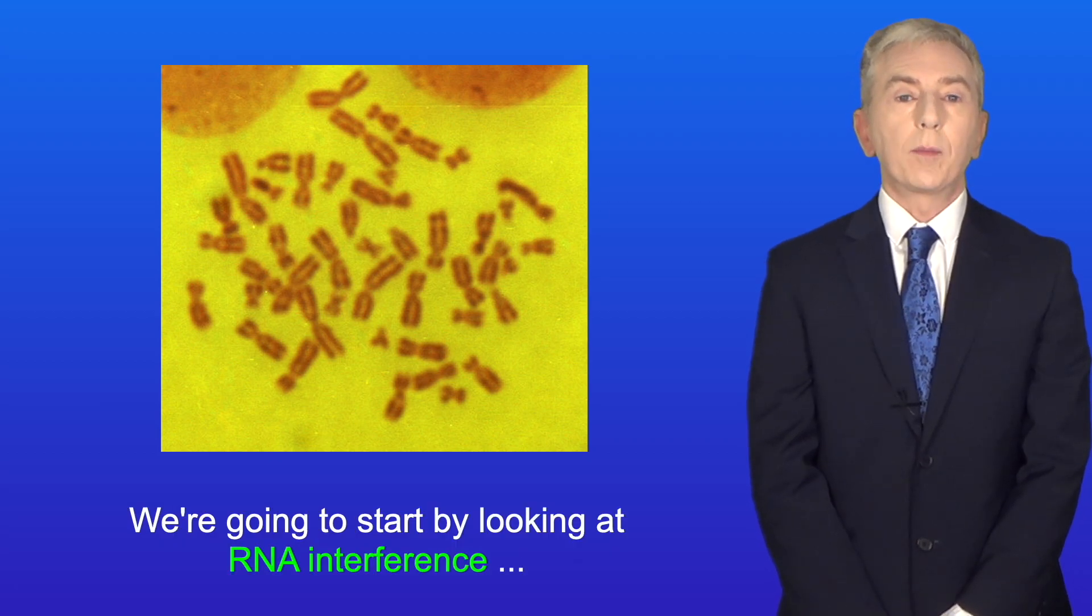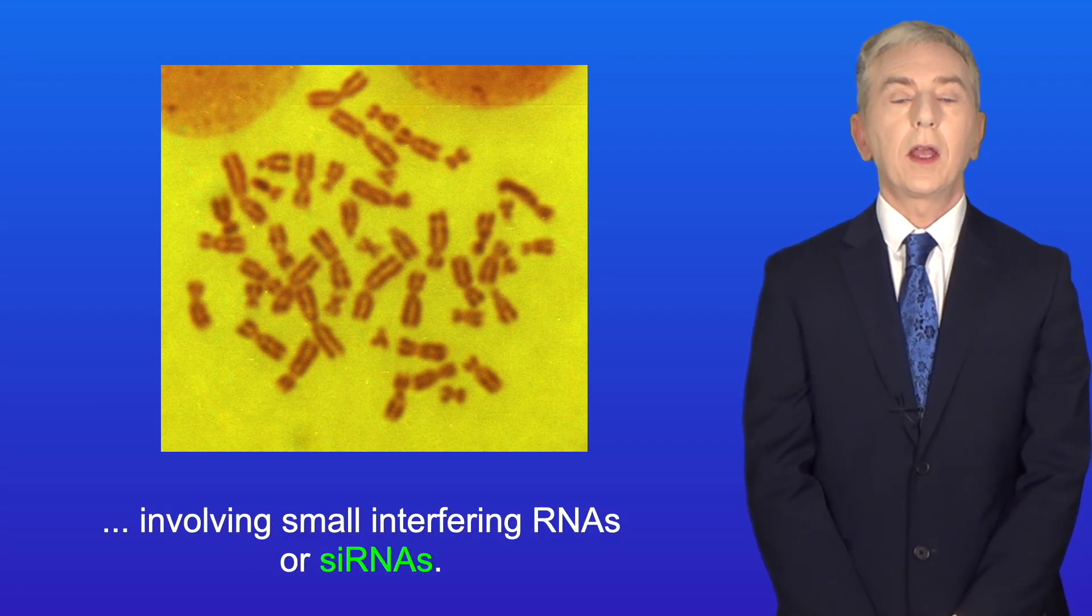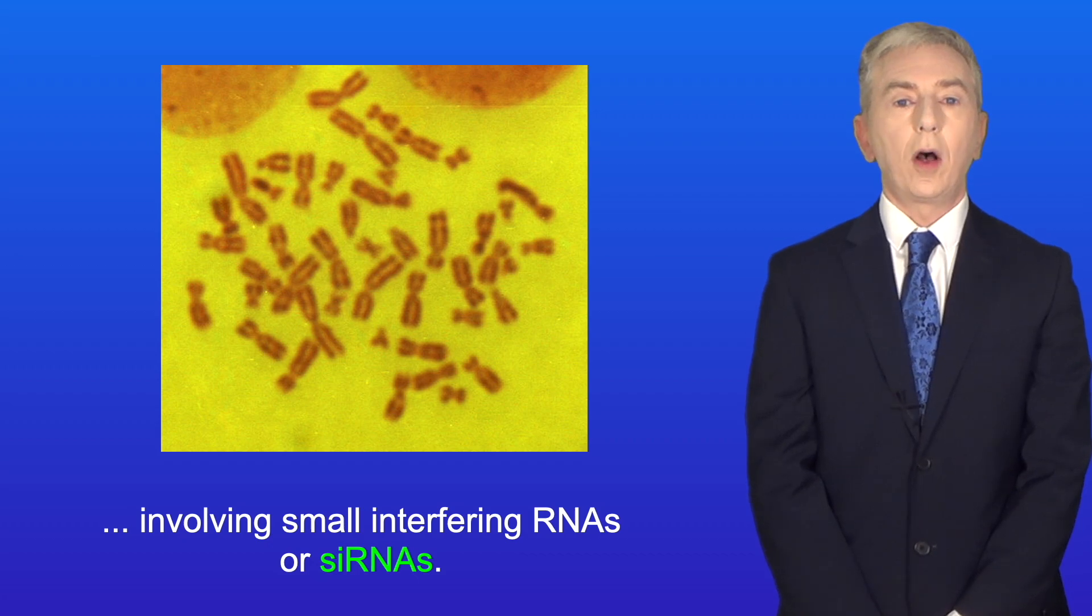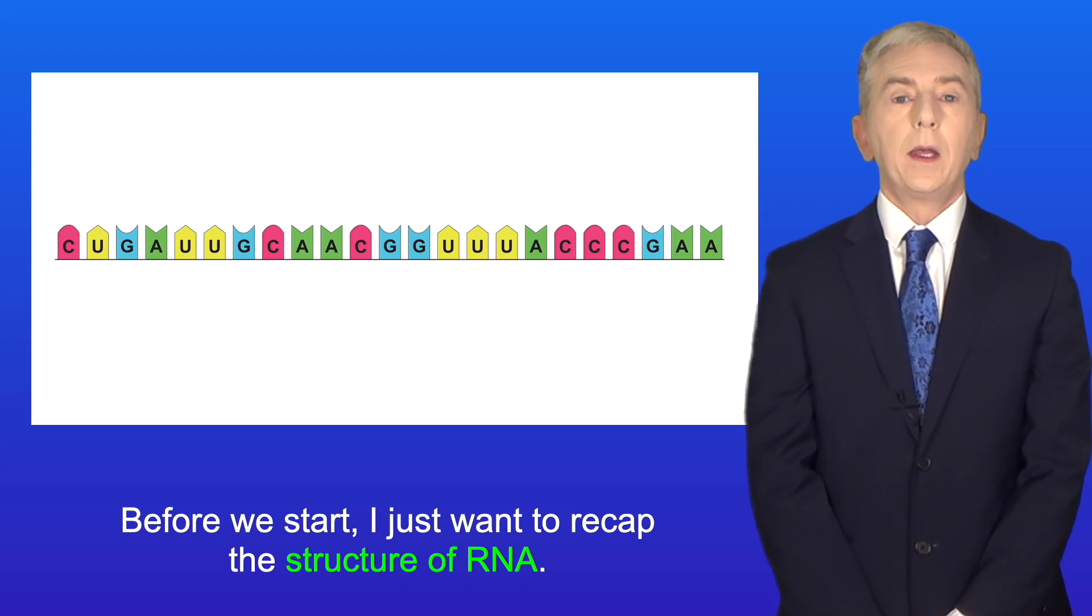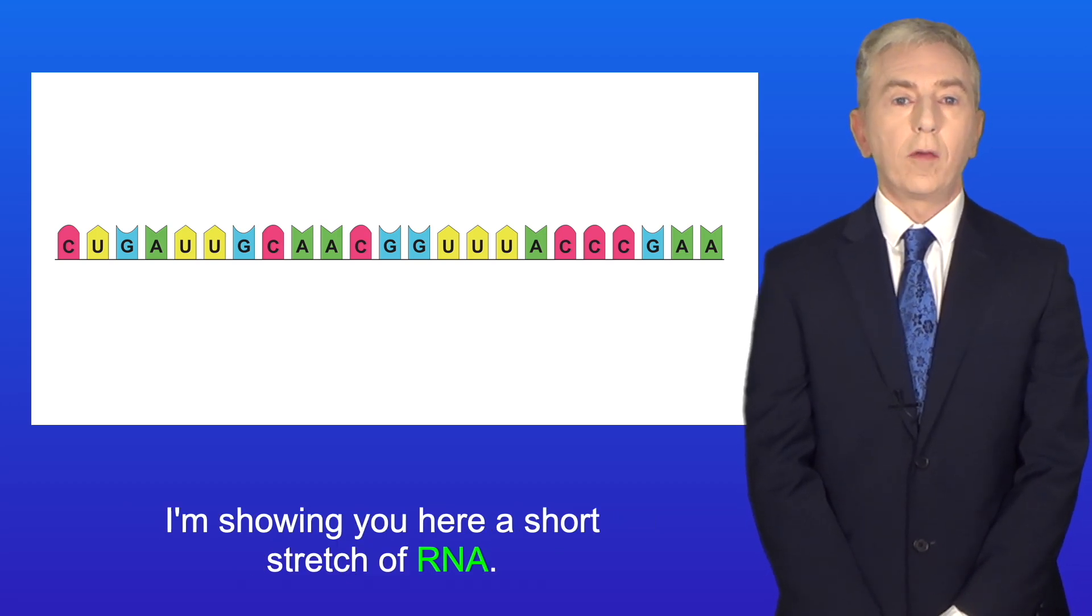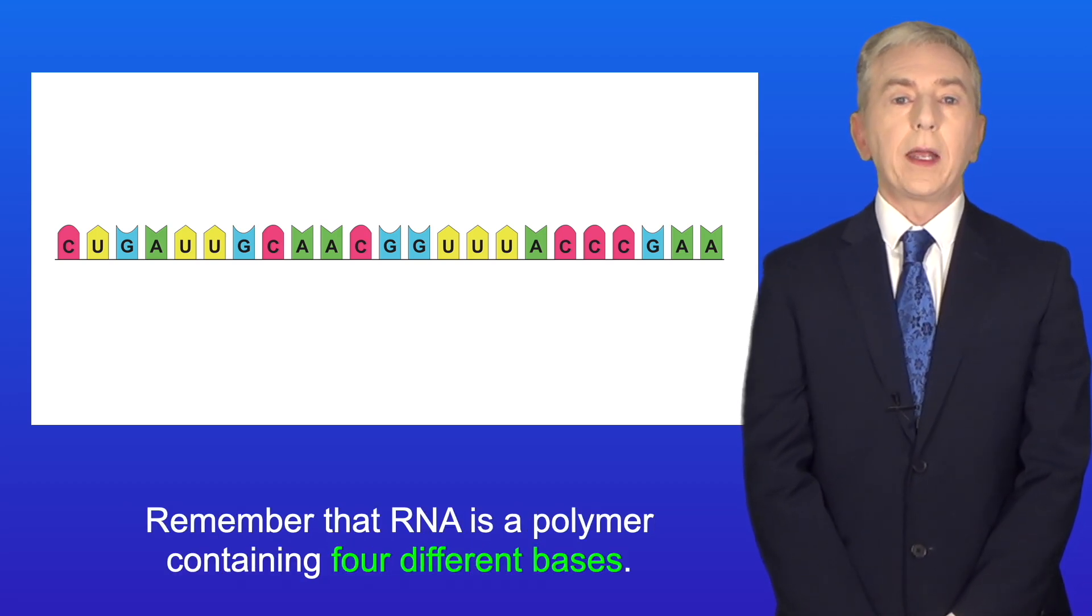We're going to start by looking at RNA interference involving small interfering RNAs, or siRNAs. Before we start, I just want to recap the structure of RNA. I'm showing you here a short stretch of RNA. Remember that RNA is a polymer containing four different bases.